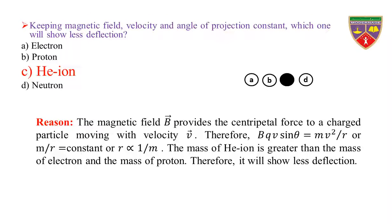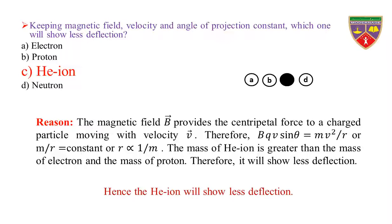Reason: The magnetic field B provides the centripetal force to a charged particle moving with velocity V. Therefore, BQV sinθ = MV²/R. Since V, θ, Q, and B are constant, M/R = constant, so R is inversely proportional to the mass of the particle, where R is the radius of curvature. The mass of helium ion is greater than the mass of electron and proton. Therefore, it will show less deflection. Neutron is not deflected because it is a neutral particle. Hence, helium ion will show less deflection.